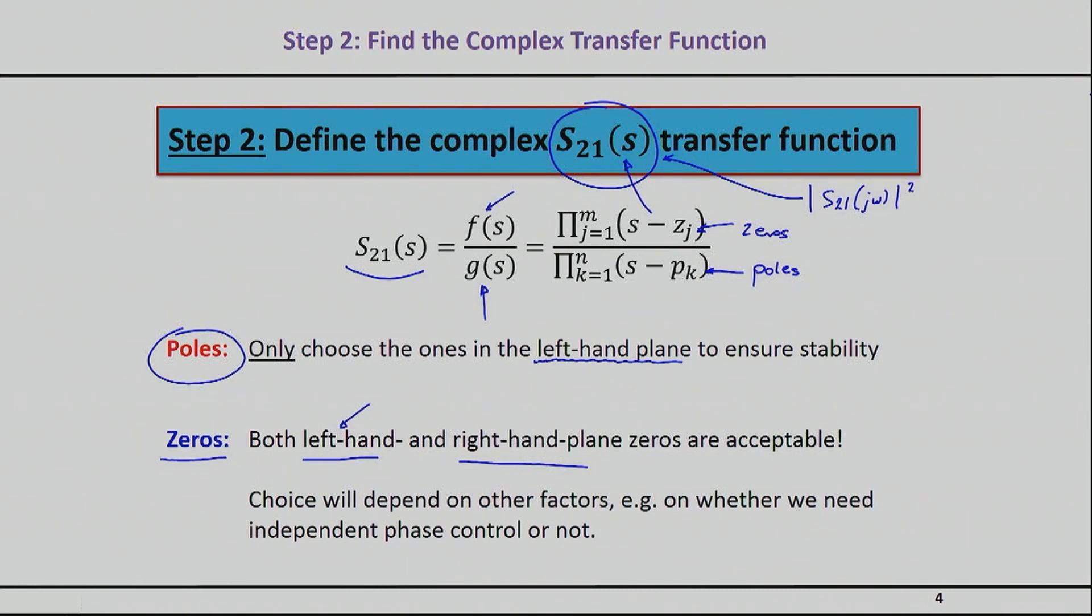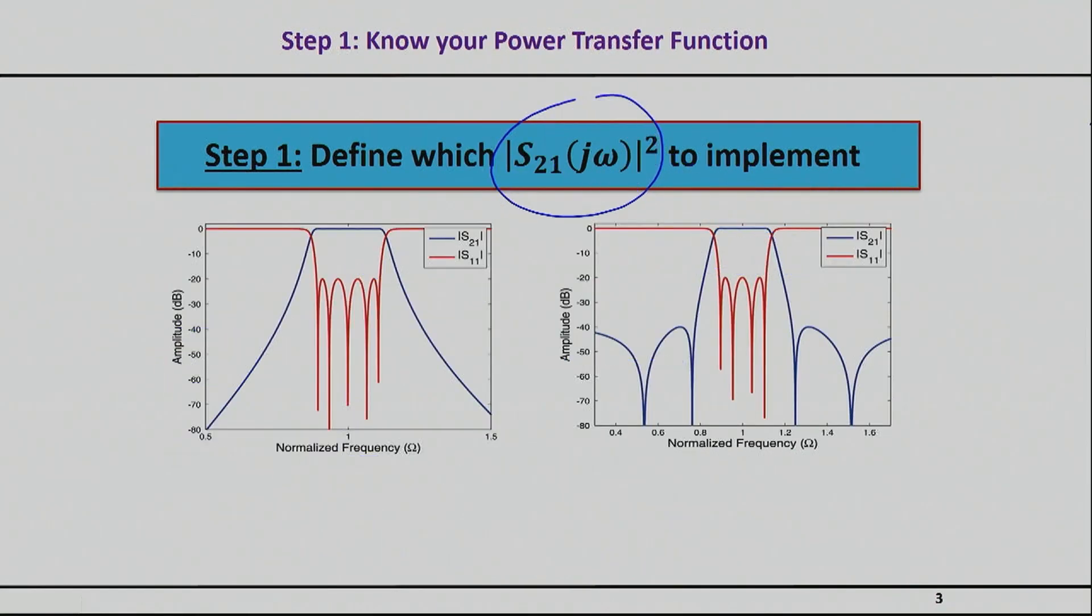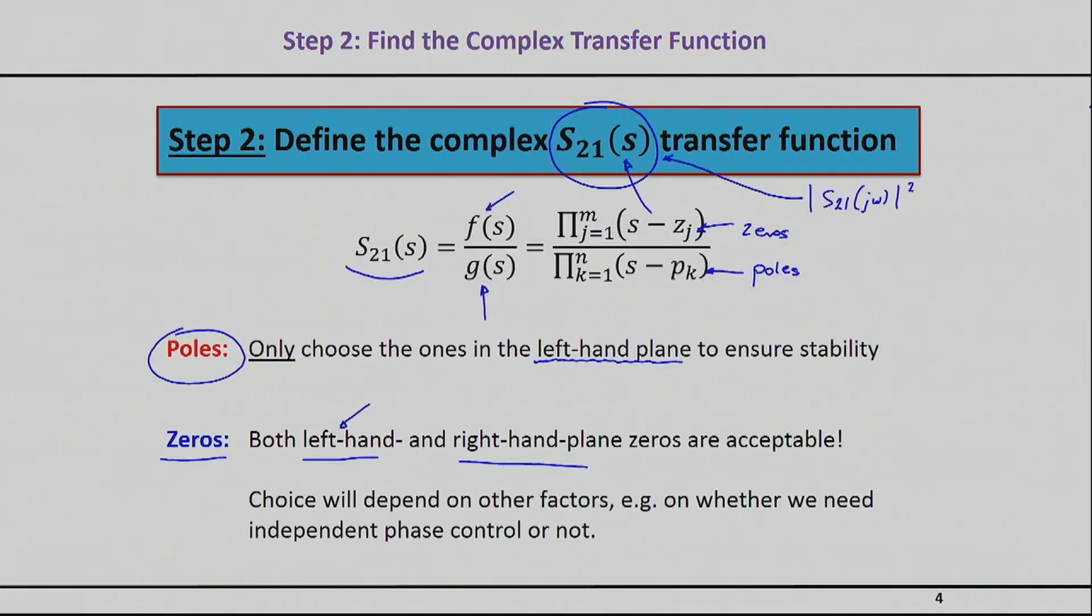It turns out that if you only choose the left-hand zeros, then you basically cannot control phase independently from magnitude. Once you choose the magnitude response, which would be something of this nature, then your phase is set. You can't do anything about that. This is a well-known property. In fact, it turns out that for this case, the phase and the magnitude are actually related by a Hilbert transform. So once you know one, you basically know the other by simply taking a pair of a Hilbert transform.